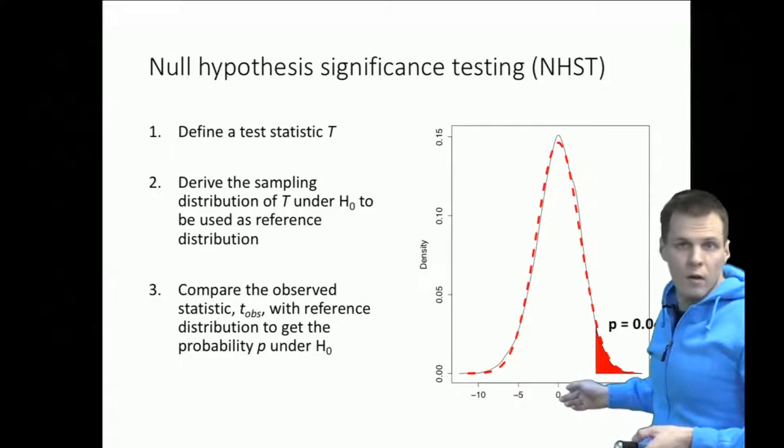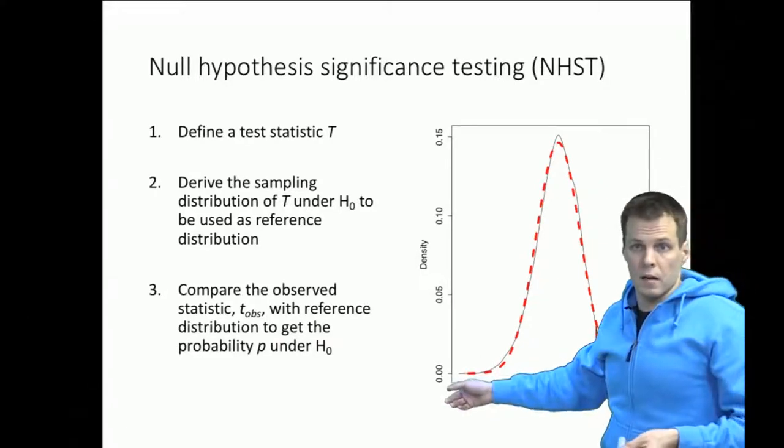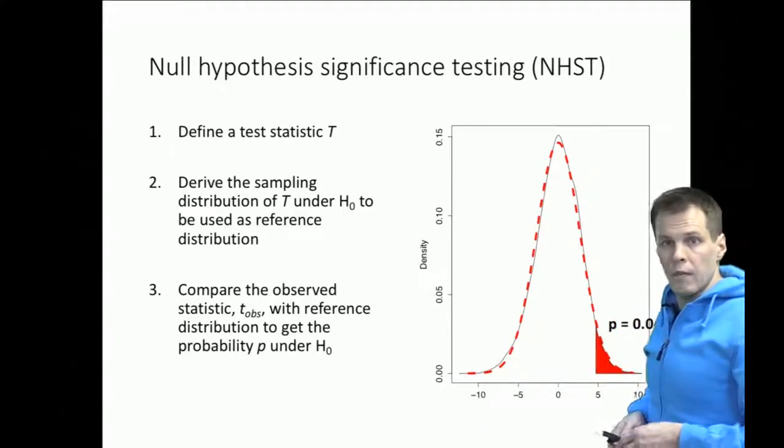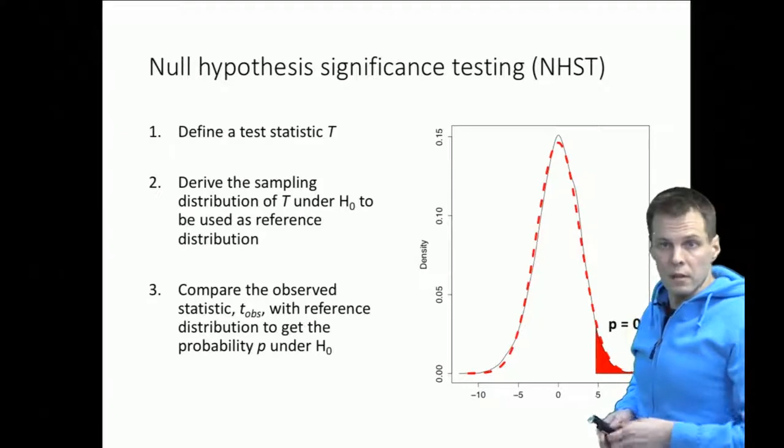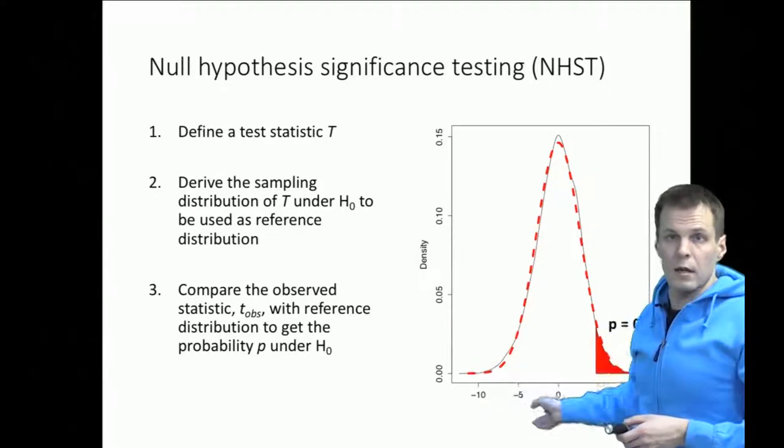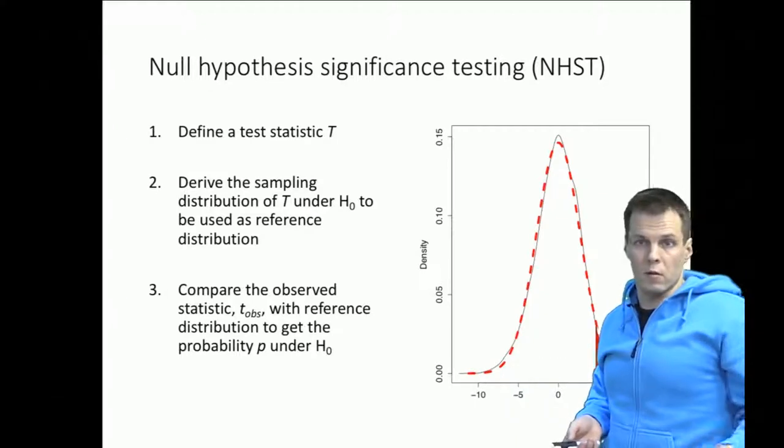So if we have ROA then the scale is somewhere between minus 10 to plus 10 for this statistic. If we have number of personnel then the scale for the statistic is in the hundreds or thousands and if we have the revenues then it's in the millions or billions of euros scale.